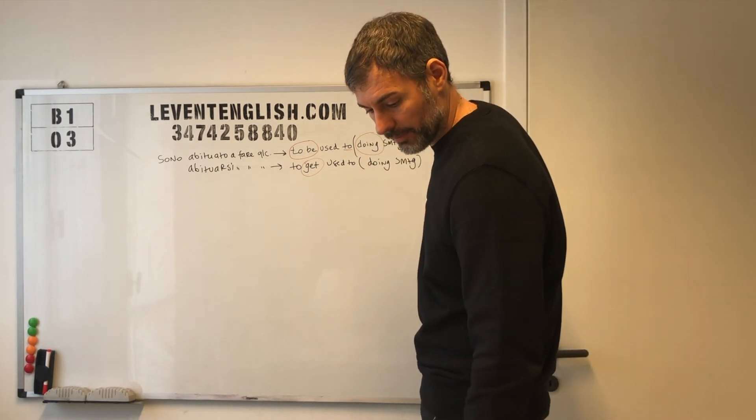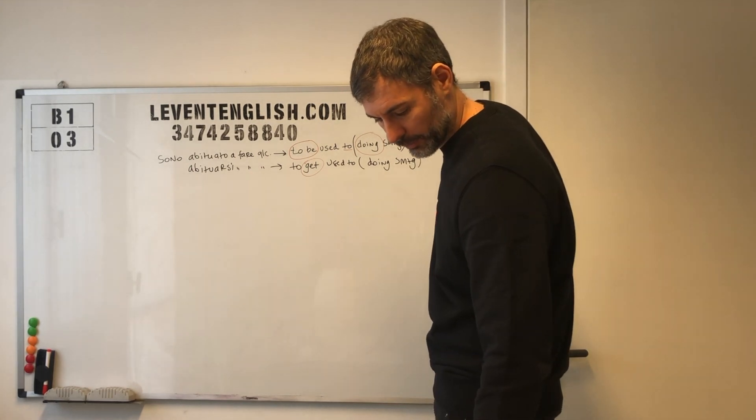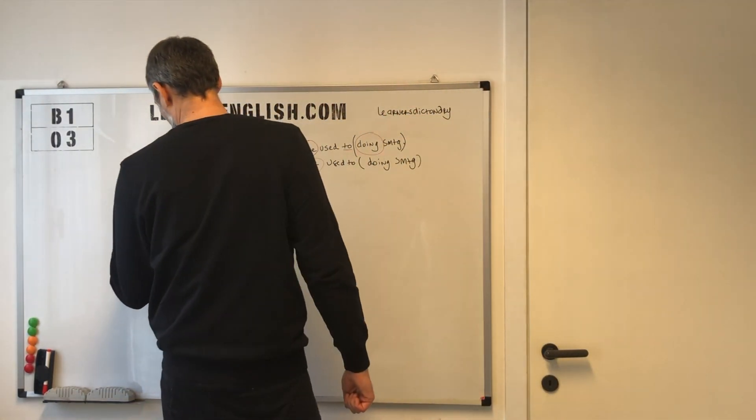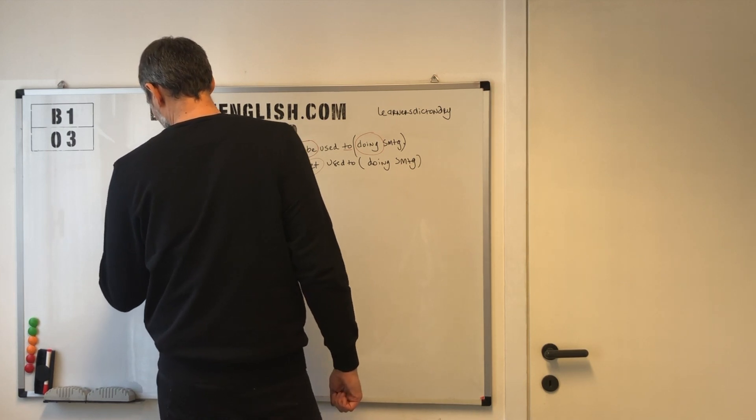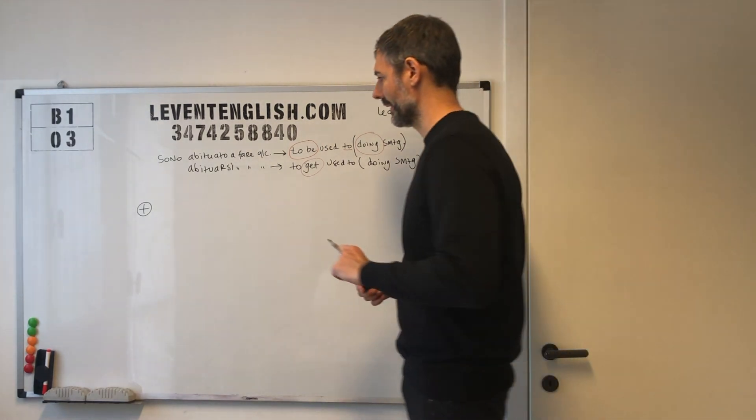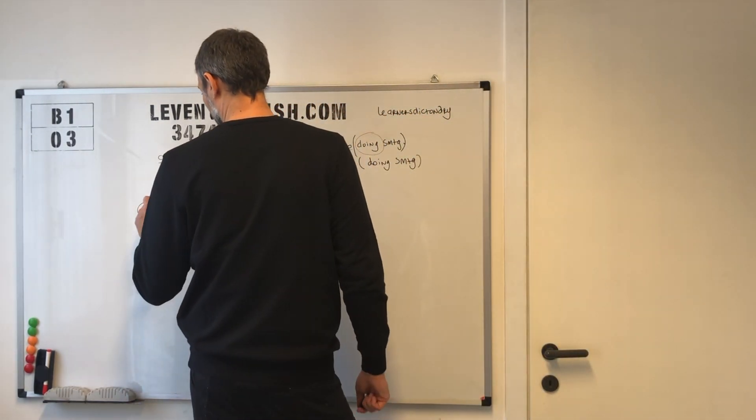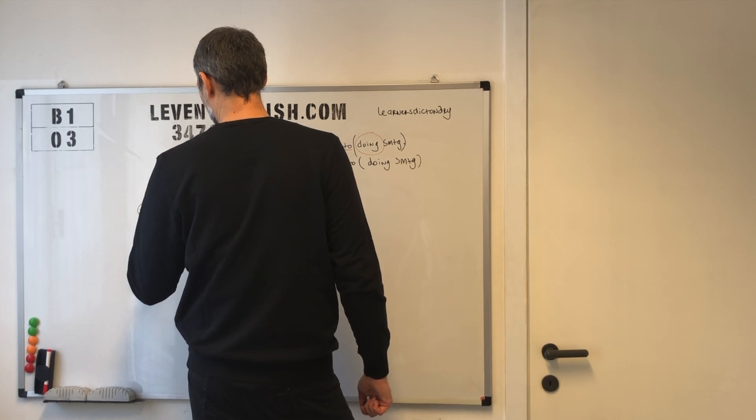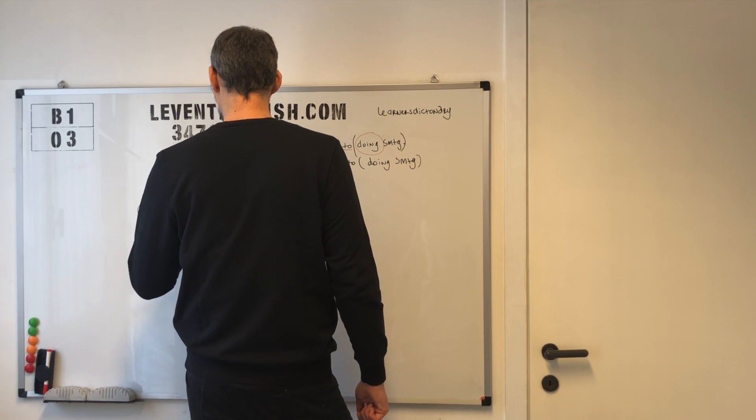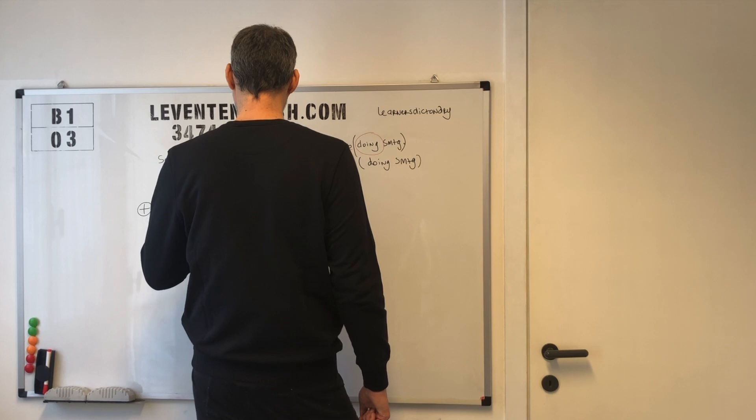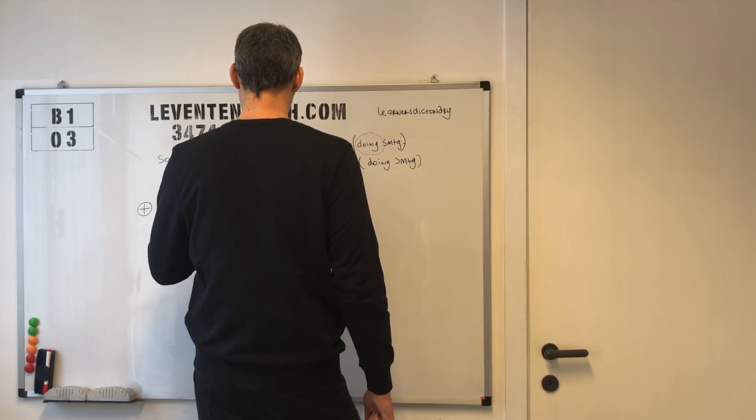To get used to doing something. Molto simile a quella precedente, solo che al posto di to be c'è to get, il resto è uguale. La differenza è che to be è sono abituato e to get è abituarsi. Spesso si usa nelle forme progressive o anche nelle forme passate. Se io voglio dire mi sto abituando a lavorare fino a tardi, I am getting used to working late.